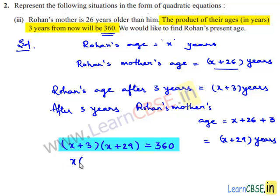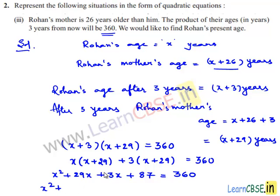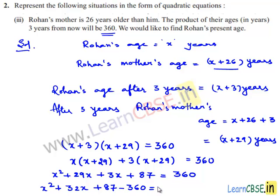Expanding: x times (x plus 29) plus 3 times (x plus 29) equals 360. This gives x squared plus 29x plus 3x plus 87 equals 360. Combining like terms: x squared plus 32x plus 87. Transposing 360 to the left-hand side, we get minus 360 equals 0. So this implies x squared plus 32x plus 87 minus 360 equals 0.